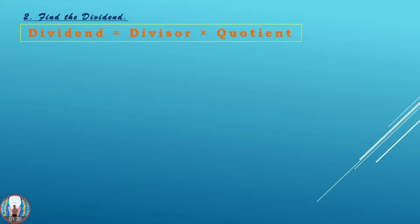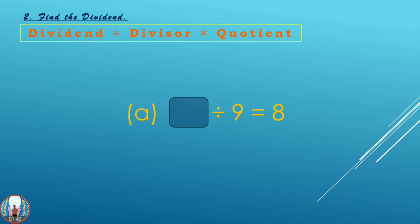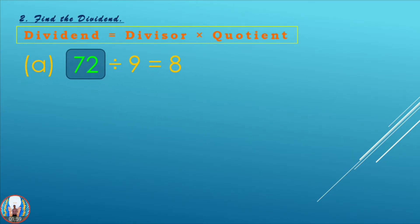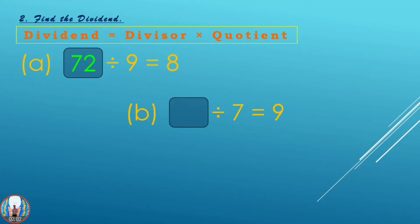Now the second question: Find the dividend. The dividend equals the divisor multiplied by the quotient. In simple terms, to find the largest number we multiply the two smaller numbers. Here the two smaller numbers are 9 and 8, and 9 times 8 is 72, so the dividend is 72. For the second sub-question, 7 and 9: 9 sevens are 63.